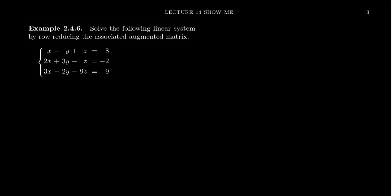In this video, we're going to solve a system of linear equations involving three equations and three unknowns. The first equation is x minus y plus z equals 8. The second is 2x plus 3y minus z equals negative 2. And the third is 3x minus 2y minus 9z equals 9.